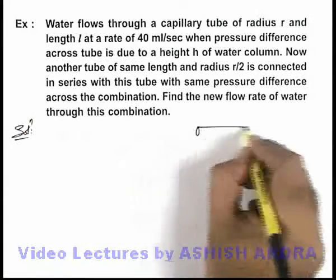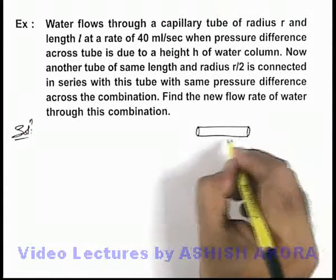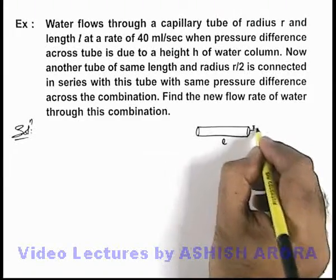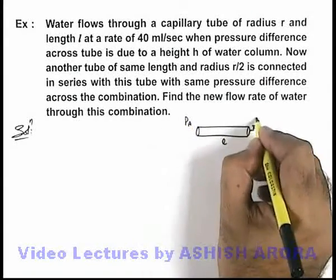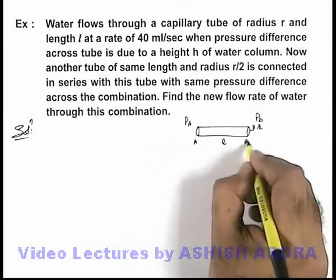In the beginning, we have a capillary tube having length l and radius r. The pressure difference at the two ends are Pa and Pb, if this end is A and this end is B.